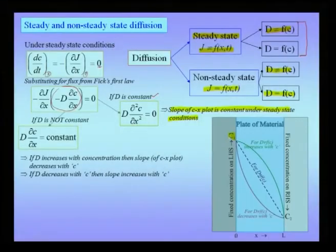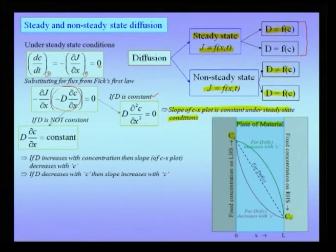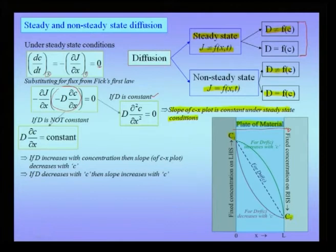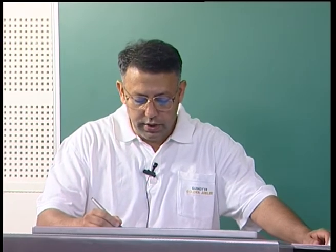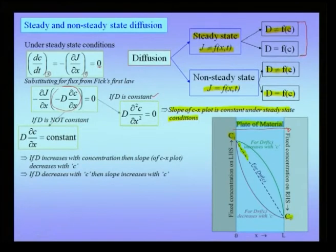Physically, suppose I have a higher concentration of material on the left-hand side of a plate shown in blue and a lower concentration on the right-hand side. The material B in A would diffuse from higher to lower concentration. Under steady state conditions, there is no accumulation of mass within the blue plate — whatever mass enters leaves from the right-hand side. If diffusivity is not a function of concentration, the slope of the c-x plot is constant, meaning I would obtain the straight-line profile shown by the dotted line.